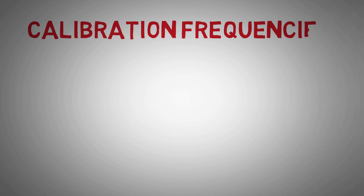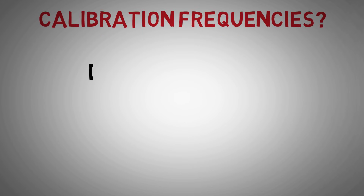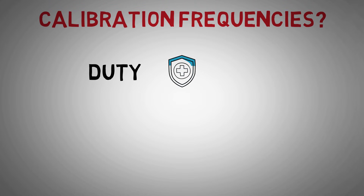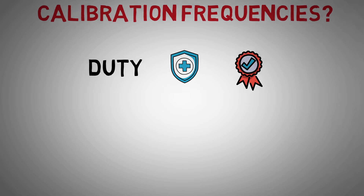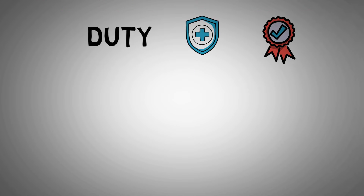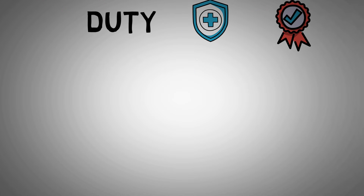So, what determines how often we calibrate an instrument? Duty: if a transmitter's accuracy is safety and quality critical, it might be calibrated monthly. If it is just giving supplementary information, it might only be calibrated every two years.